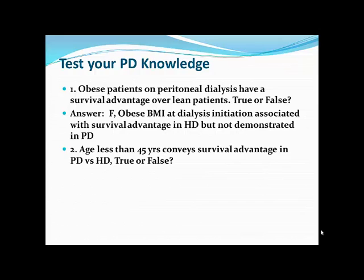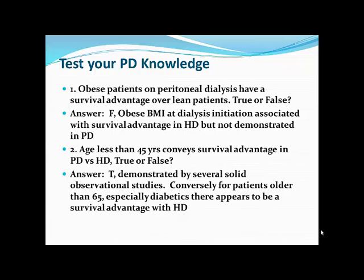Age less than 45 conveys a survival advantage in peritoneal versus hemodialysis — true or false? This is actually true. Several solid observational studies suggest younger patients under 45 may have some survival advantage with PD. Conversely, patients over 65 in most studies have slightly higher mortality compared to hemodialysis patients, especially those who are diabetic.